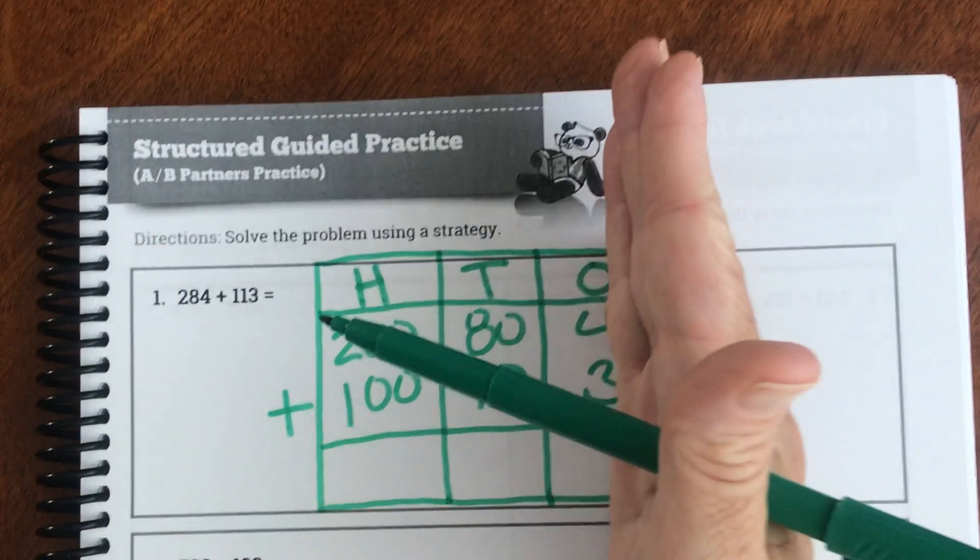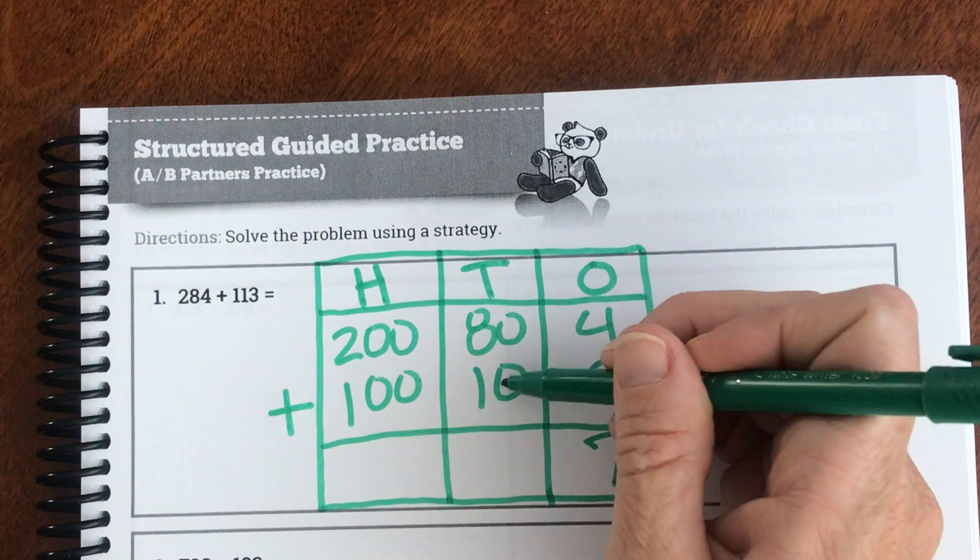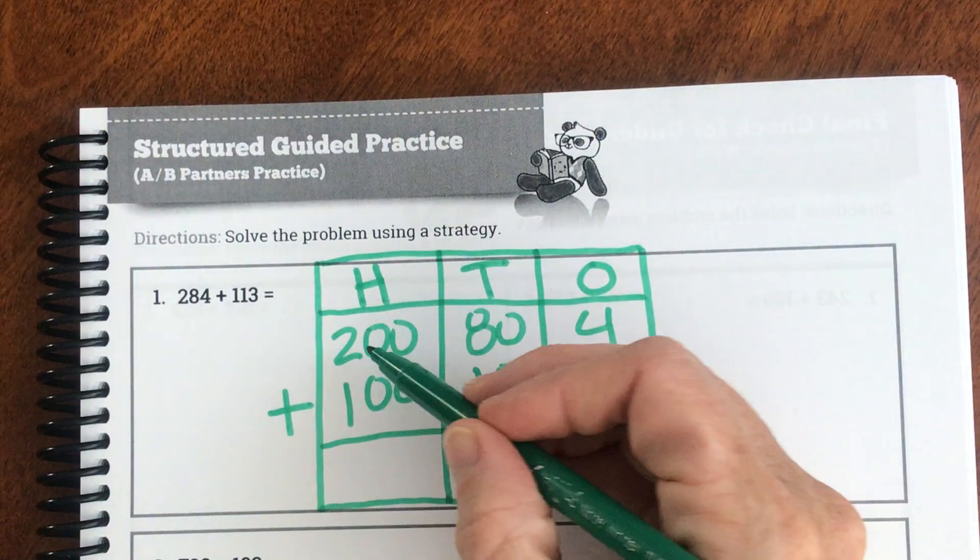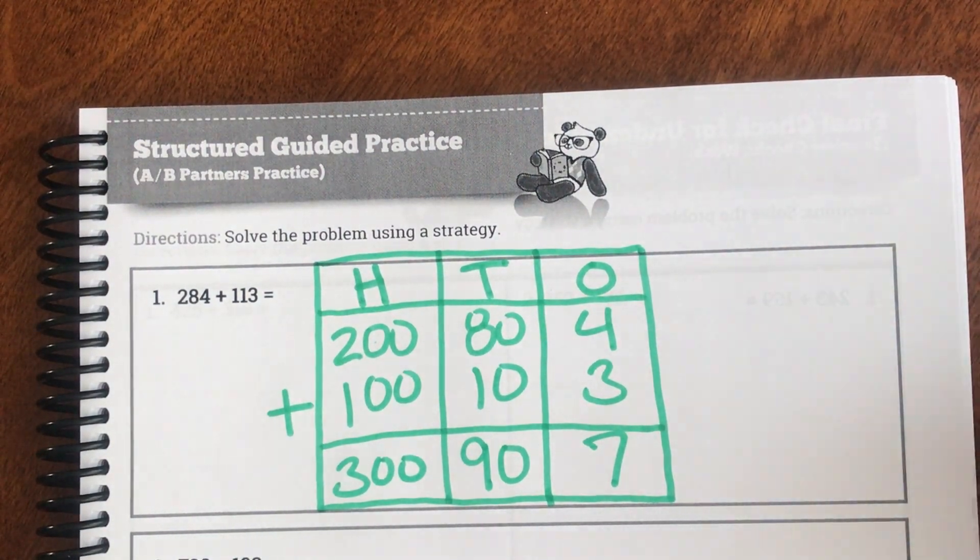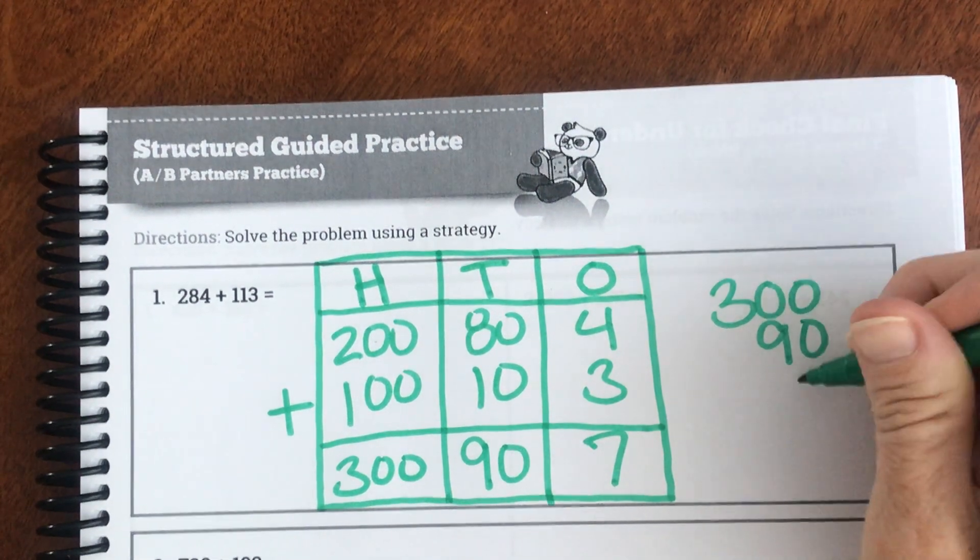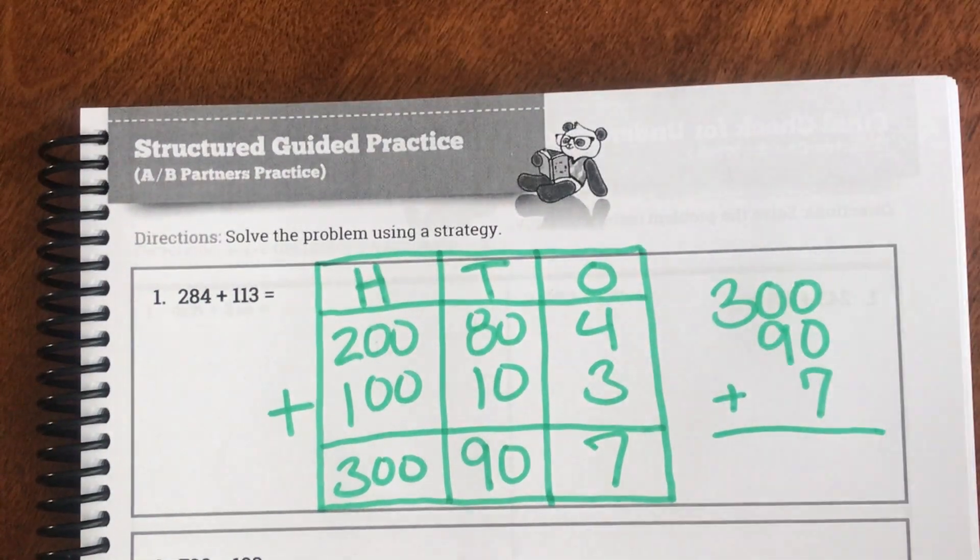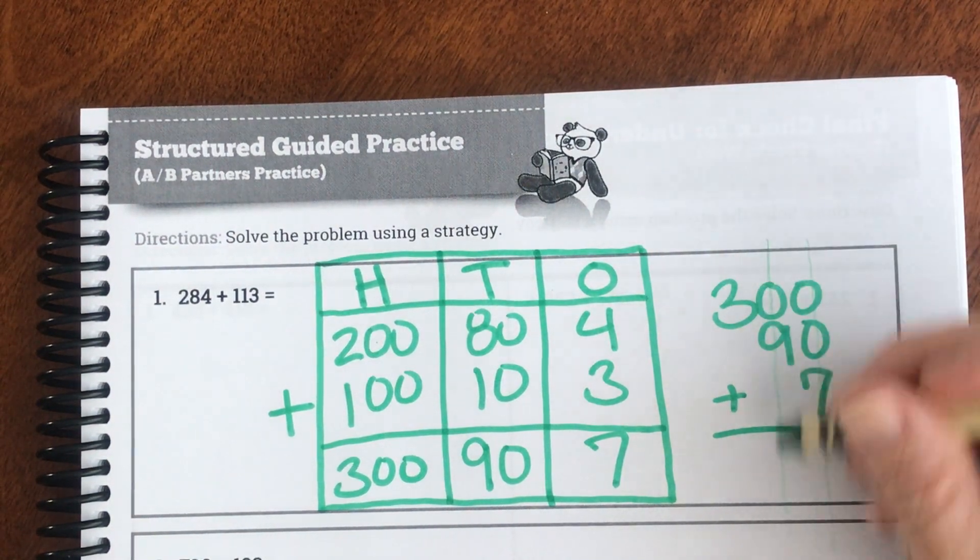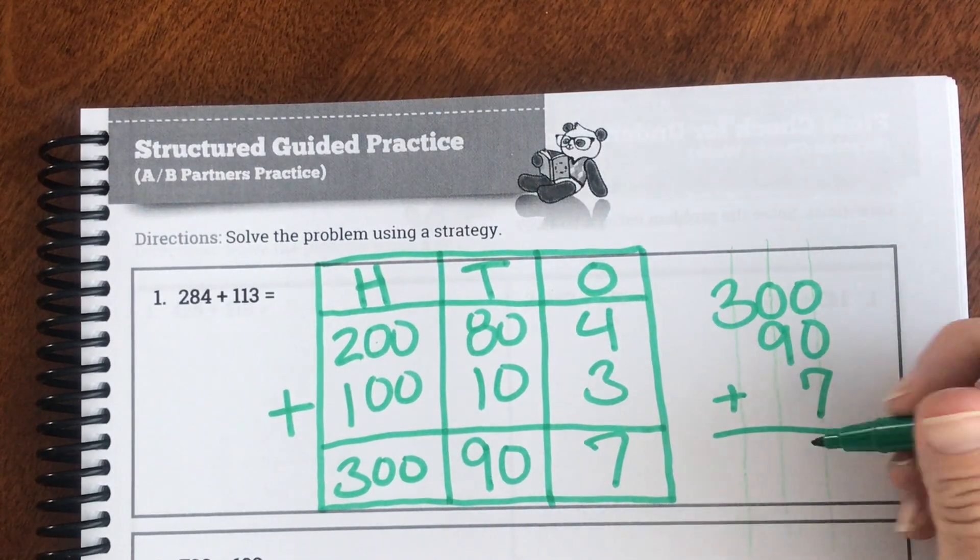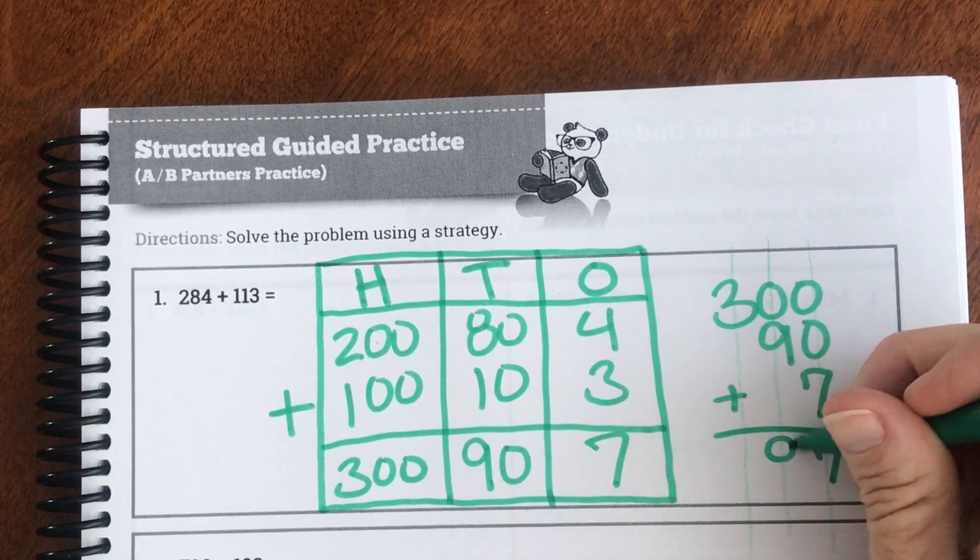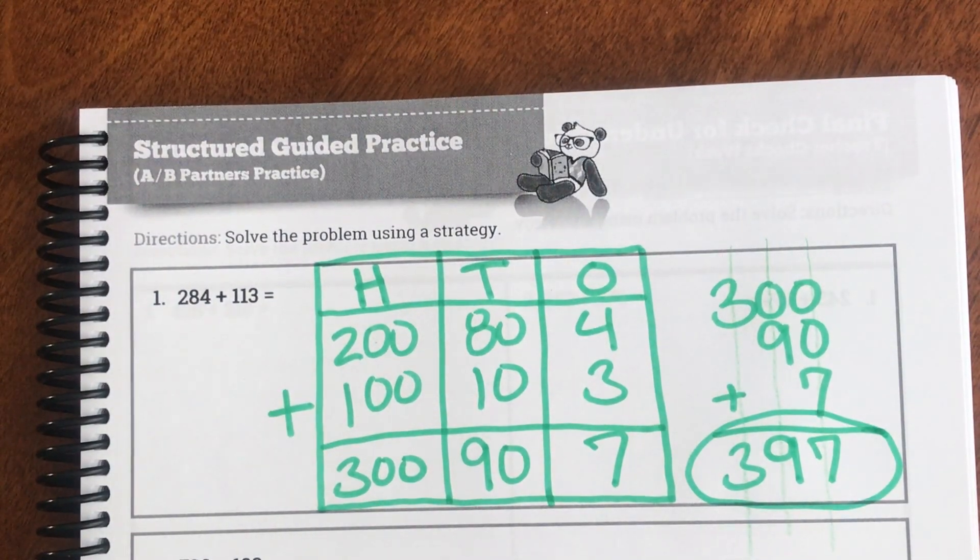Step two is we're going to add, and we always start in the ones column. So 4 + 3 is 7. 80 + 10 would be 90. And 200 + 100 would be 300. So our final step, which is our working form, we're going to add 300 + 90 + 7. Before you add those, I want you to take a look and ask yourself, are your numbers really lined up? Are these digits lined up really nicely? So I have 0 + 0 + 7 is 7. 0 + 9 is 9. And 3 plus nothing is 3. So our answer is 397.